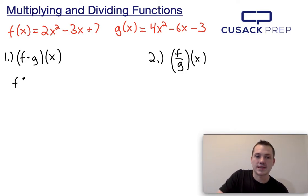So what this means is this is simply going to be f of x times g of x. Now we can see that f of x is equal to 2x squared minus 3x plus 7, so what I'm going to do is I'm going to replace f of x with that whole value. So I'm going to write 2x squared minus 3x plus 7.